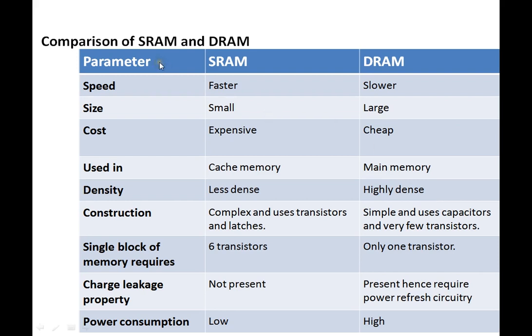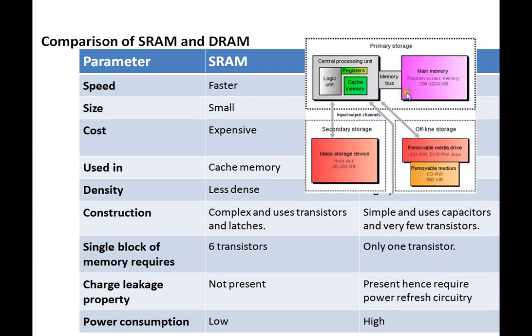Here is the comparison of SRAM and DRAM. Both have pros and cons: if you consider speed, SRAM has the advantage; if you consider cost and density, DRAM has the advantage. SRAM is usually used in cache memory, whereas DRAM is used in main memory.